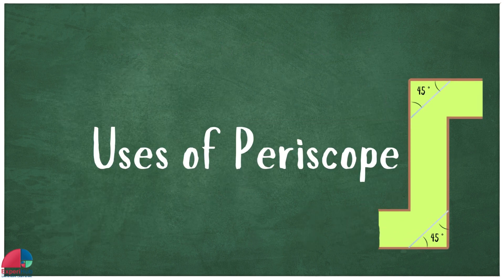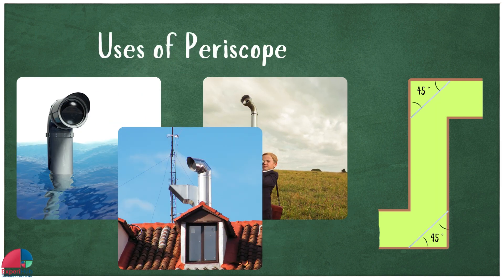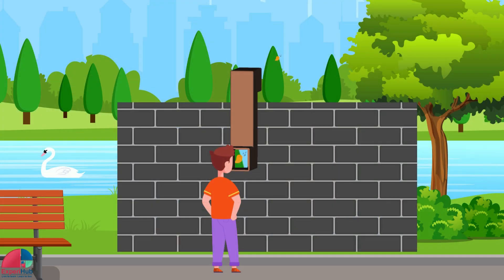Periscopes are used in submarines so they can see above the water while staying hidden. You can also make a simple periscope at home with cardboard tubes and small mirrors to see how it works.